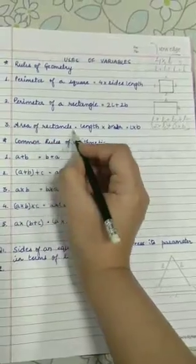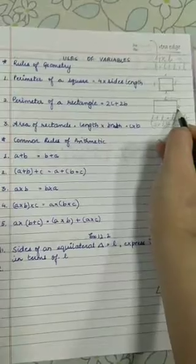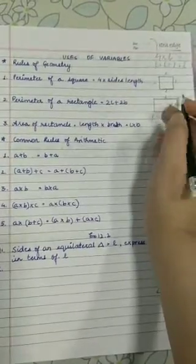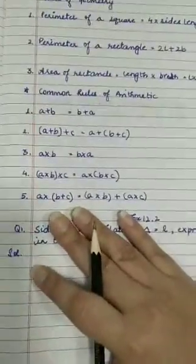Similarly, area of a rectangle. We can just multiply length and breadth and find out. So that is the formula: length into breadth. Now, common rules of arithmetic.